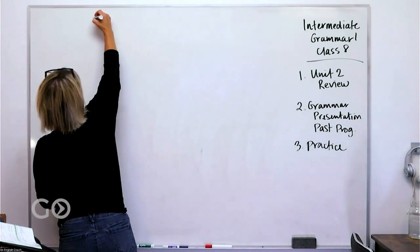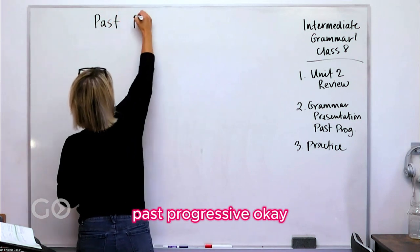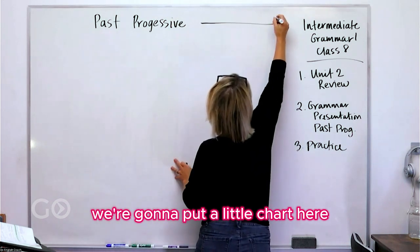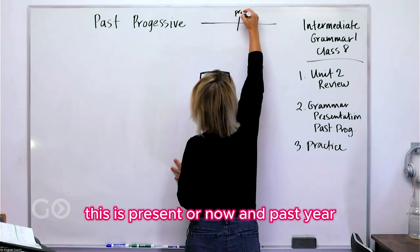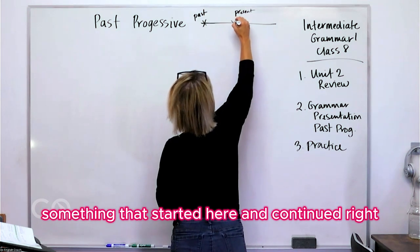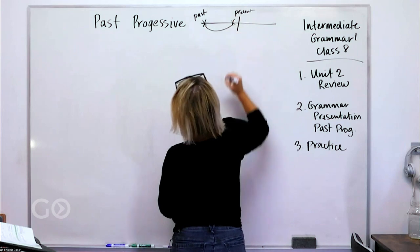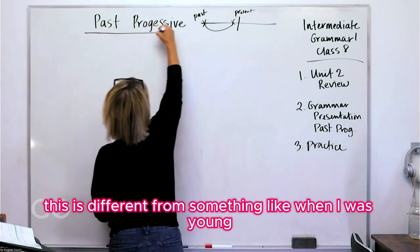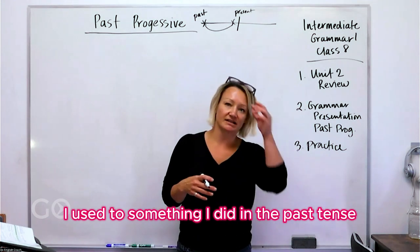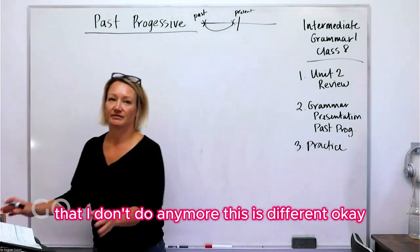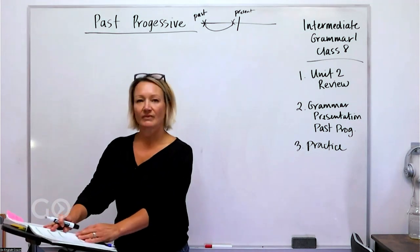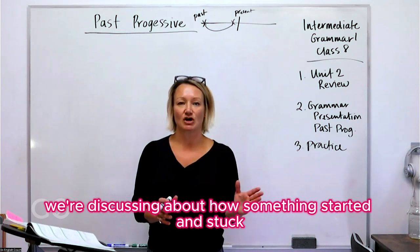So we're going to look at past progressive. Something that started in the past — we're going to put our little chart here. This is present or now, and this is past. Here's something that started here and continued. This is different from something like 'when I was young, I used to' — something you did in the past that you don't do anymore. Past progressive is almost like you're telling a story; we're discussing how something started and stopped.